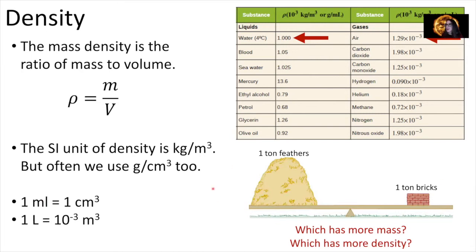Here's a great example to illustrate the difference between mass and density. We have two masses on either side of a pivot point. For the system to be in equilibrium, the torque on the left must equal the torque on the right, and the force creating that torque is the weight — mass times gravity. So both objects have the same weight and therefore the same mass. That's our one ton of feathers and one ton of bricks.